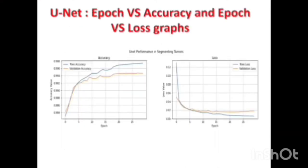The epoch versus accuracy and epoch versus loss graphs for the U-Net model are as shown. As the number of epochs increases, the accuracy increases and the loss decreases. At the end of 30 epochs, the training accuracy is 99.7% and the validation accuracy is approximately 99.5%.